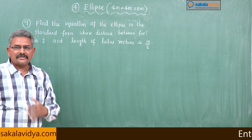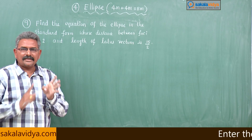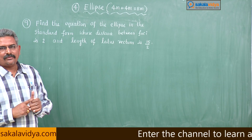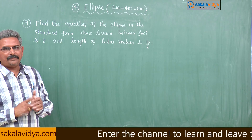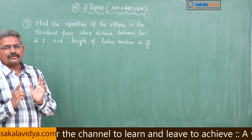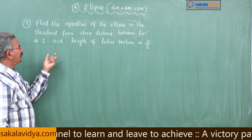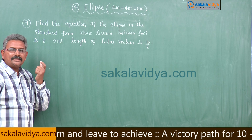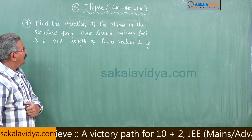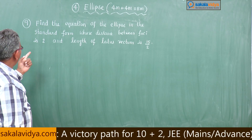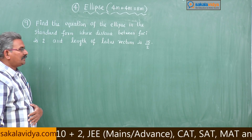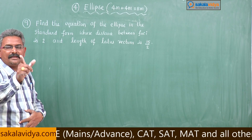Standard form — what do you mean by standard form? That means x squared by a squared plus y squared by b squared is equal to 1, providing a greater than b. Distance between the foci is 2ae. And next, what is given here? The length of the latus rectum, that is 2b squared by a.